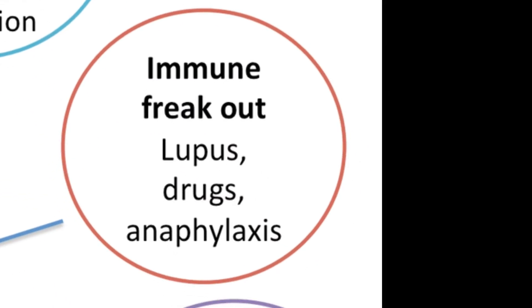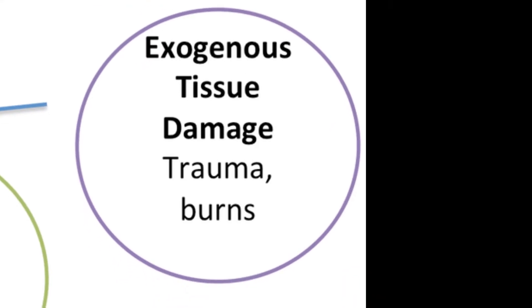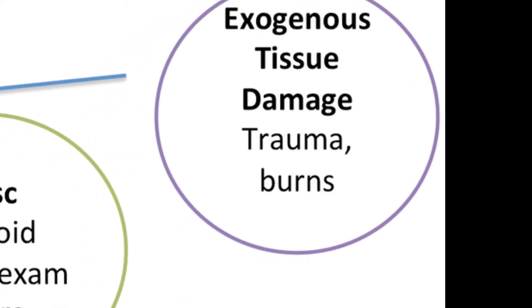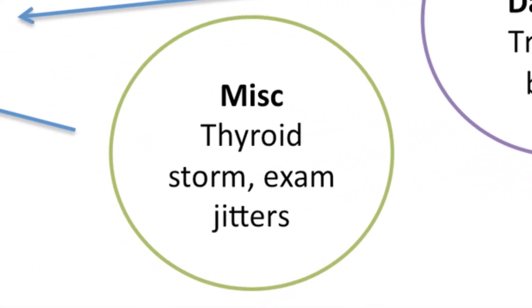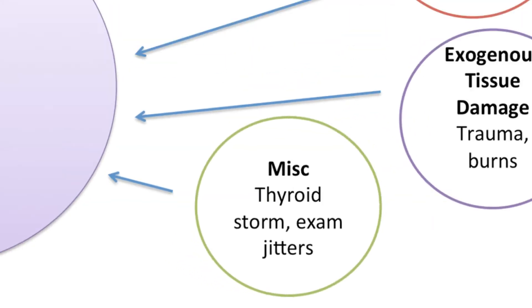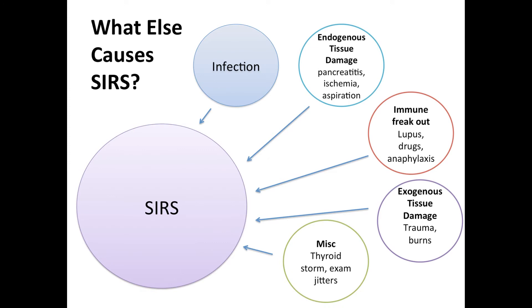You could have immune freakouts, such as from lupus. You could have other tissue damage that's not endogenous, like pancreatitis was. You could just have a really bad multiple trauma, crush injuries can do this. And then miscellaneous includes neurological problems like thyroid storm, adrenal insufficiency, and of course if you're freaked out about exams, it's well documented that can cause SIRS.